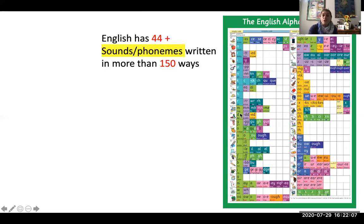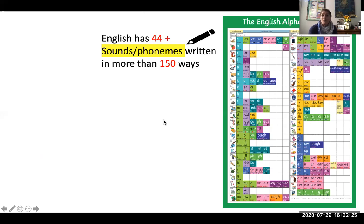And English has 44 plus sounds and phonemes written in more than 150 ways. You see the across rainbow would be the alternative way of spelling, alternative spelling to write this phoneme.